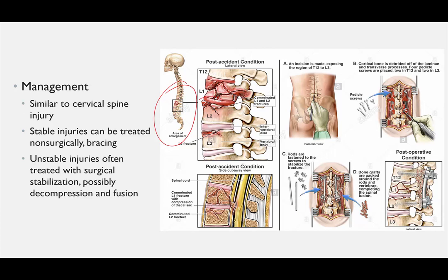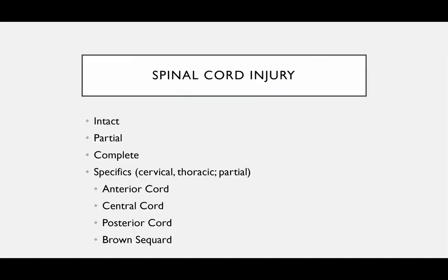Here you can see an example of comminuted fractures involving the L1 area — the transition zone between the thoracic and lumbar spine — also involving the end plate of L2. The patient in this case was determined to have an unstable fracture meeting the criteria we discussed earlier, and underwent a procedure in which decompression, stabilization, bone grafting, and fusion were performed for long-standing stability.